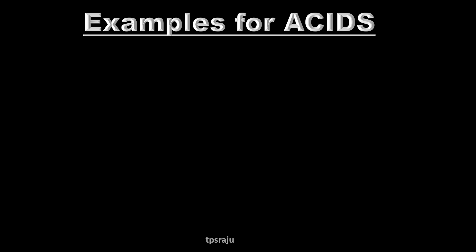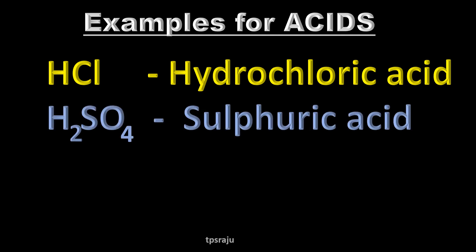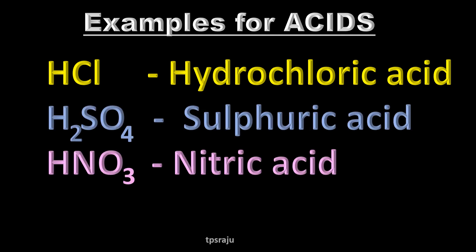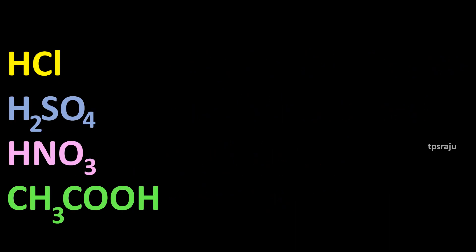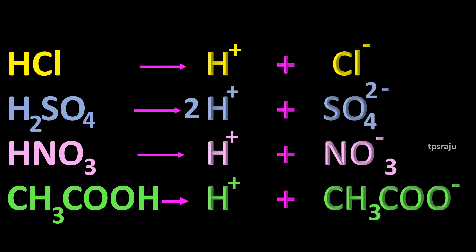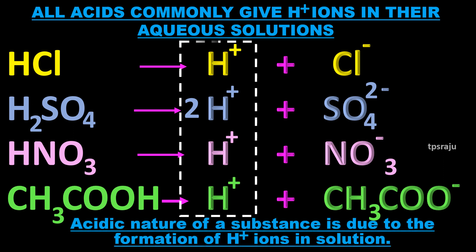First, we have to know some examples for acids: hydrochloric acid, sulfuric acid, nitric acid, acetic acid, etc. All acids commonly give H+ ions in their aqueous solutions. These H+ ions are responsible for the acidic nature of the acids.